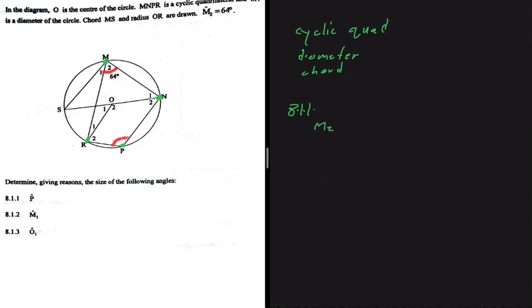That's a property of a cyclic quad. So we have M2 plus P being equal to 180 degrees - opposite angles of a cyclic quad sum up to 180, right?